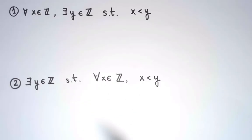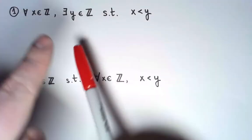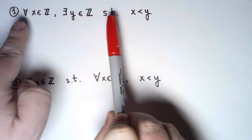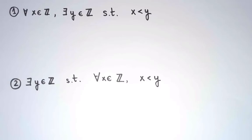They look very similar. The only difference is that I have swapped the order of the two quantifiers. And yet, this drastically changes the meaning. I can tell you that one of them is true and the other one is false.